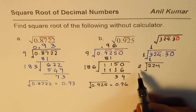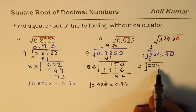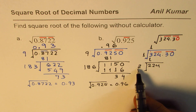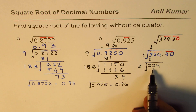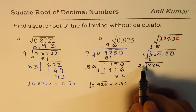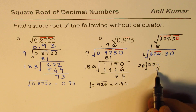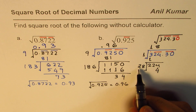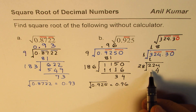We try 8: eight times 8 is 64, eight times 2 is 16, and 16 plus 6 is 22. So 28 times 8 equals 224 — exactly what we need. We place 8 in the quotient, and 8 times 28 is 224.